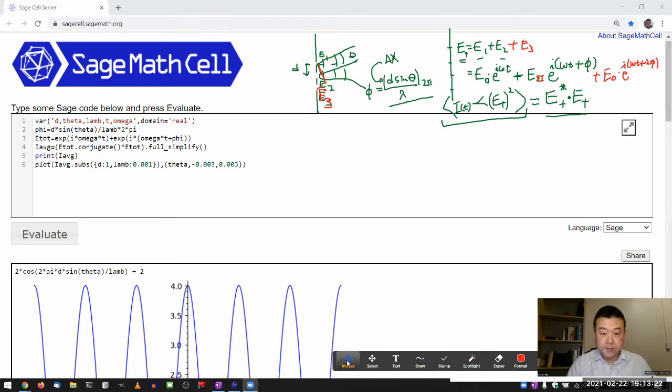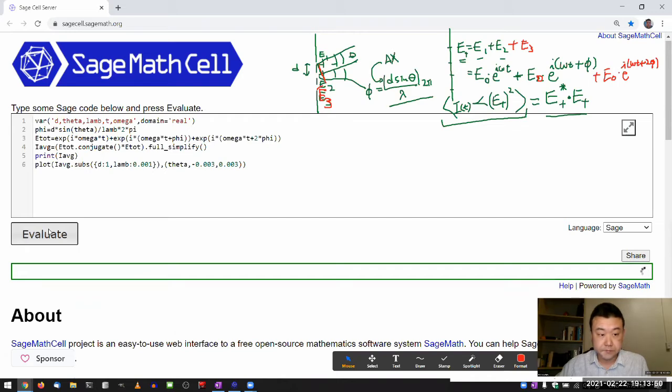So let me add that to my total electric field. So I have E1, E2, and finally E3, exponential of i omega t plus two times phi. And the rest, I think remains the same. So let me run this and see what I get.